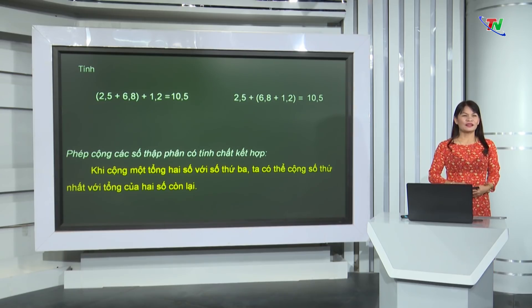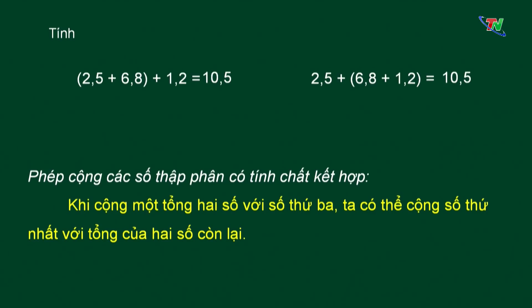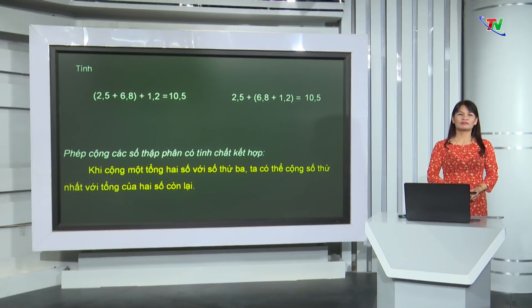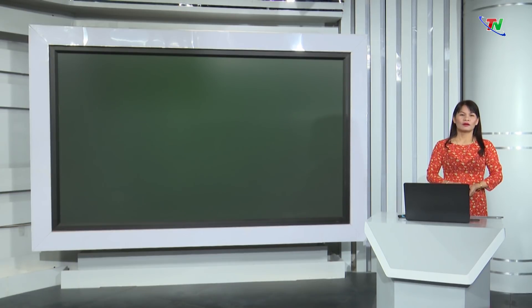Bây giờ chúng ta hãy ghi chép lại nội dung cô giáo vừa giúp chúng mình ôn tập nhé. Chúng ta tiếp tục chuyển sang nội dung tiếp theo: ôn tập về trừ 2 số thập phân.